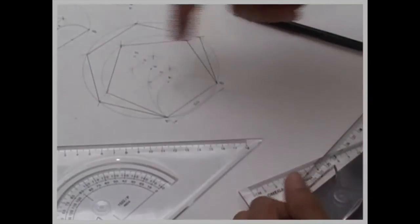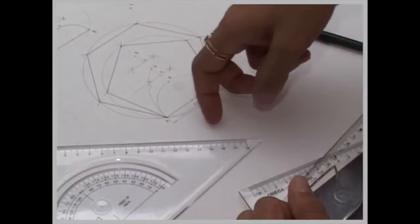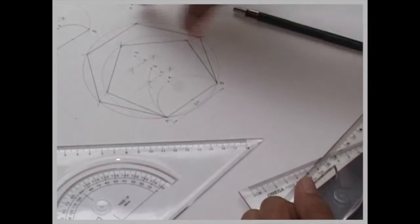We can follow the same method. We take 7 to a as a radius, draw a circle. Take side ab, cut on both the sides, and keep on cutting it. You will get a septagon.